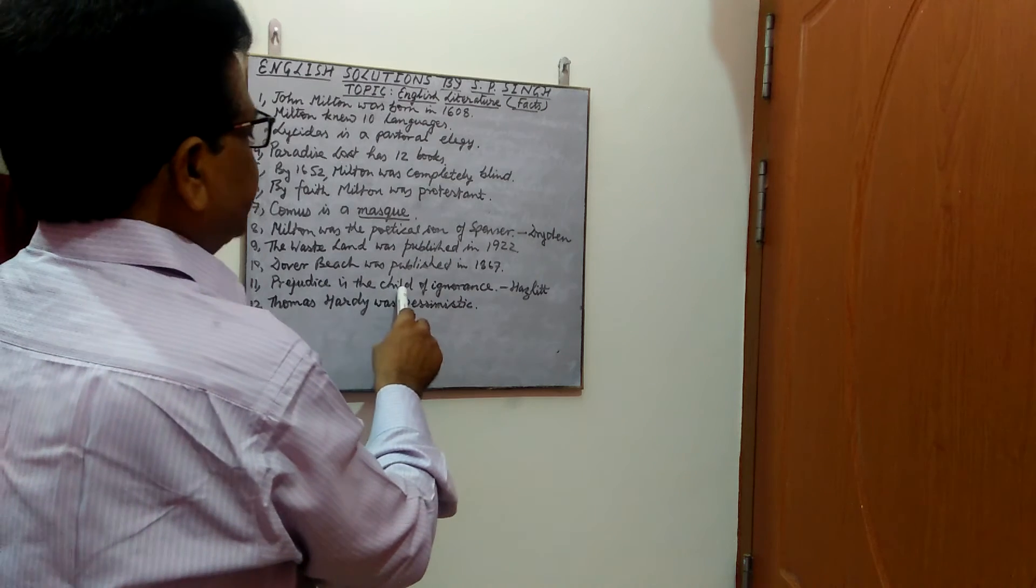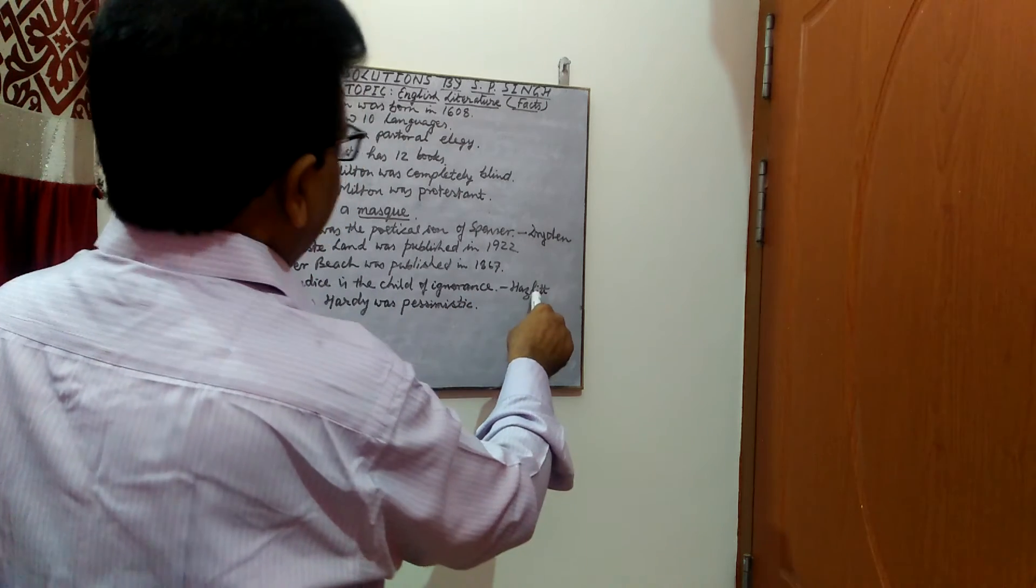Next, Prejudice is the child of ignorance. This is the famous quote by William Hazlitt.